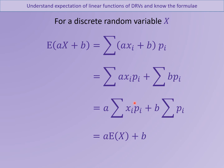We know that the sum of all the X values times the P values is just the expected value of X, so this gives A times E[X]. The sum of all the probabilities equals 1, so B multiplied by 1 is just B. Therefore, the expected value of AX plus B is simply A times the expected value of X, plus B.